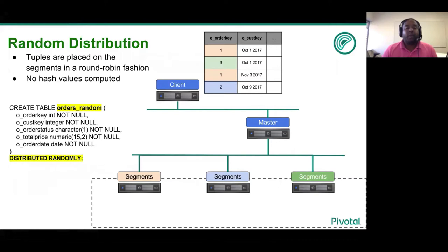If the distribution policy is random, then the tuples are placed in a round-robin fashion. For instance, let us look at the following architecture of your GPDB instance. A client connects to the master node via psql, ODBC, or JDBC.